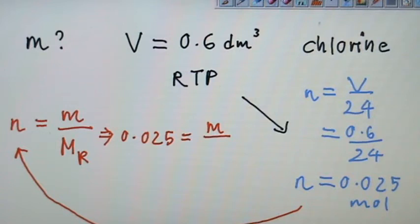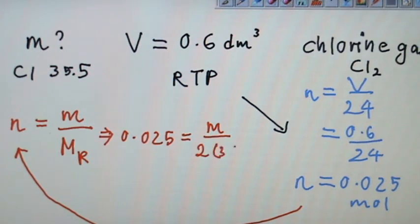Chlorine gas is actually Cl₂. We know that Cl has RAM of 35.5, but if you have Cl₂ means 71 and the molar mass is 71. Remember chlorine gas is 2 times 35.5.